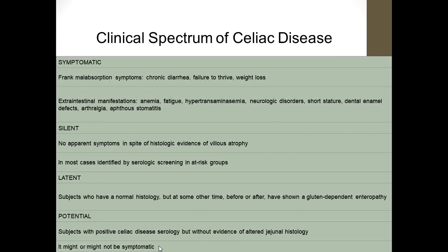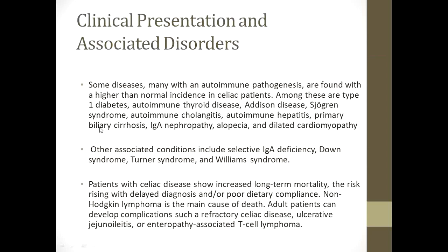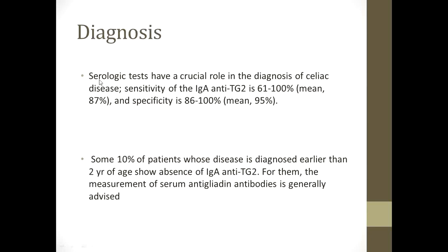Patients with celiac disease show increased long-term mortality, with the risk rising with delayed diagnosis and poor dietary compliance. Non-Hodgkin lymphoma (NHL) is the main cause of death. Adult patients can develop complications such as refractory celiac disease, ulcerative jejunoileitis, or enteropathy-associated T-cell lymphoma.